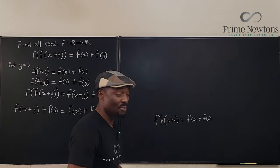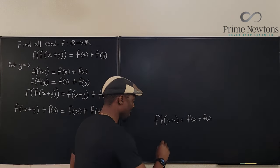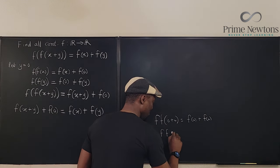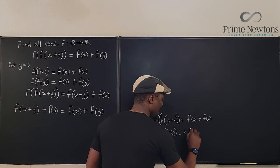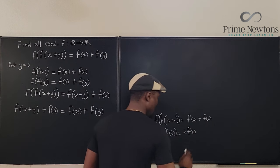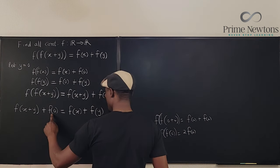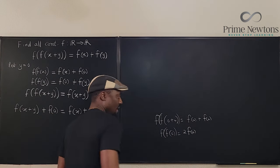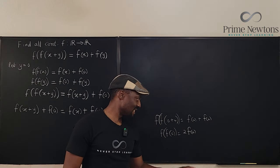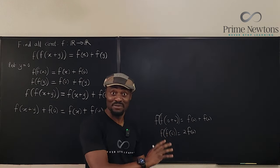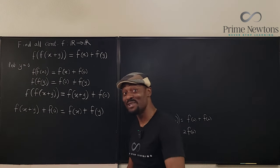So I have f of f of zero plus zero equals, it's going to be f of zero plus f of zero. Yeah, that's it. No matter how you manipulate it, you're going to have f of f of zero equals two times f of zero. Does it help me here? No. So this doesn't help me. Yeah, it doesn't help me. I'm going to leave it for now. It might help me. You never know.